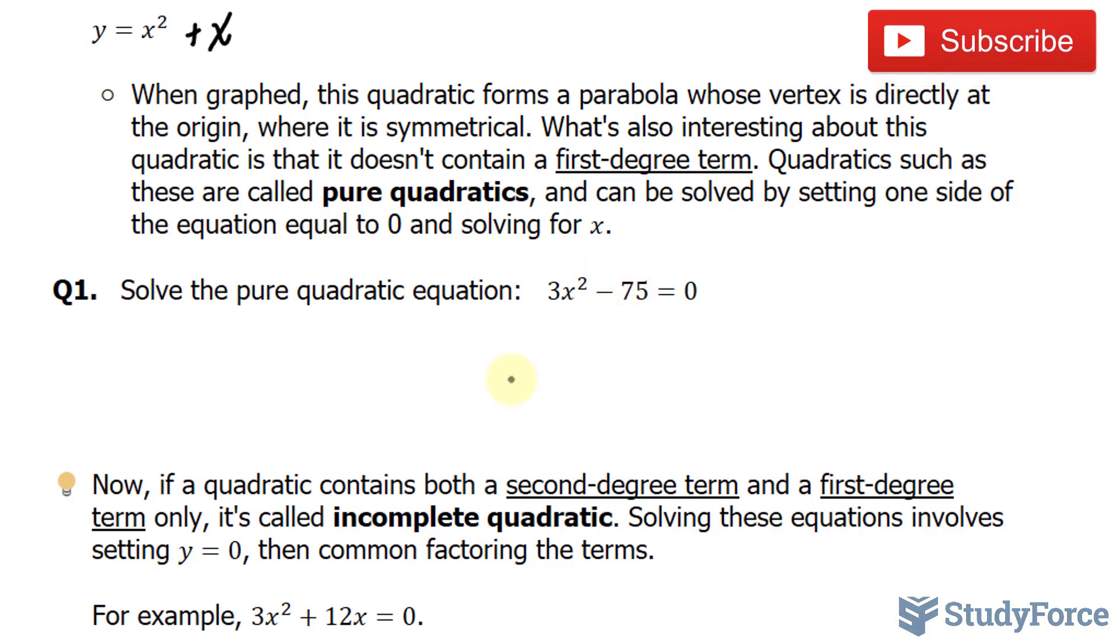It does, however, contain the constant minus 75 and that's fine. So the first thing that I'll do is take this minus 75 over to the right side. This gives us 3x squared is equal to 75.